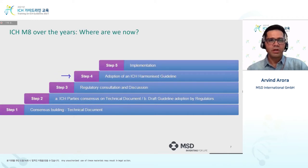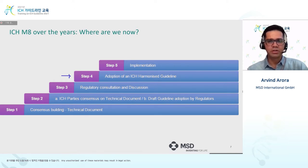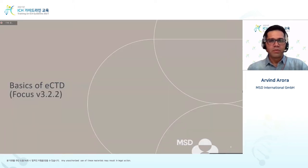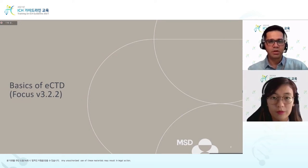In terms of ICH, we all know it takes a five-step implementation process. Right now we are at step four — adoption of ICH harmonized guidelines — and in the next step we will see how and when different countries will be adopting version 4.0 guidelines. We will now switch over to Isabel, who will take us through the basics of the current ECTD version 3.2.2.